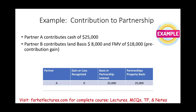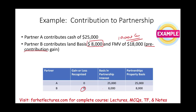Partner B contributed land with a basis of $8,000 and fair market value of $18,000. What we have here is a gain — a pre-contribution gain. There is a gain embedded in that property before you contributed this land. What are the tax consequences? No tax consequences. Notice we have a $10,000 gain — no tax consequences for now. The basis in the partnership interest for B is $8,000, and the basis of the land for the partnership is also $8,000. The basis transferred from the partner to the partnership.